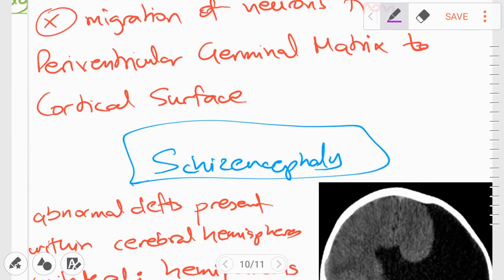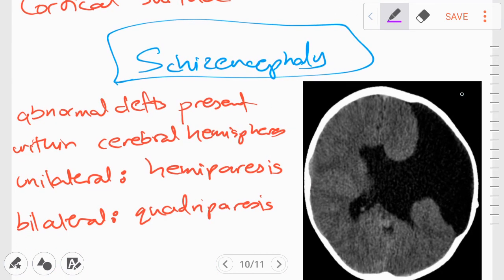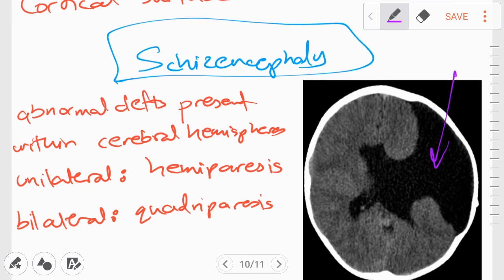The first disorder in this set of disorders is called schizencephaly. In schizencephaly, we have CSF-filled clefts within the cerebral hemispheres. You can see these here. If it's just unilateral, we can have congenital hemiparesis. If it's bilateral, we can have spastic quadriparesis. And another fact is that there is also an increased risk of epilepsy associated with this disorder.